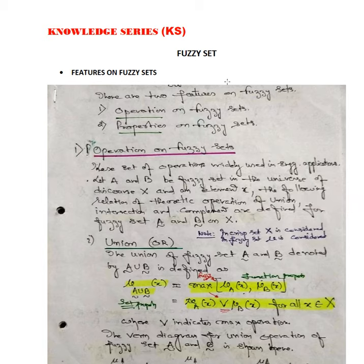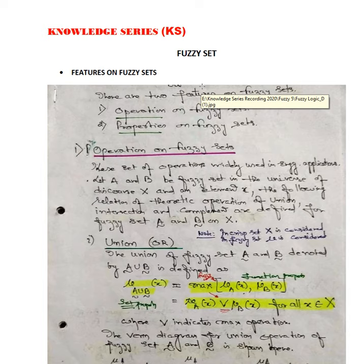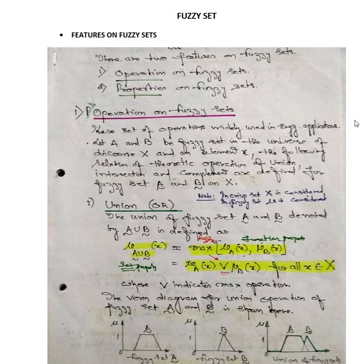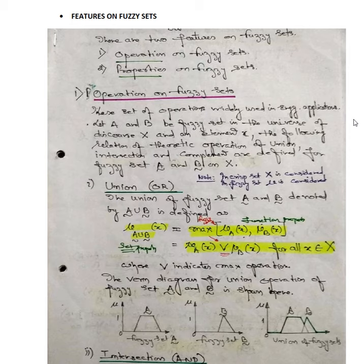Dear Students, welcome to the Knowledge Series in the area of Features on Fuzzy Set. We have already seen Features of Crisp Set in our earlier video series. In continuation to the Fuzzy Set, we are going to discuss the different Features of Fuzzy Set. There are two basic features in the case of Fuzzy Set: one is Operations and another is Properties.